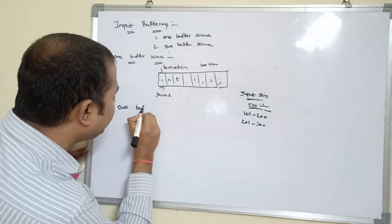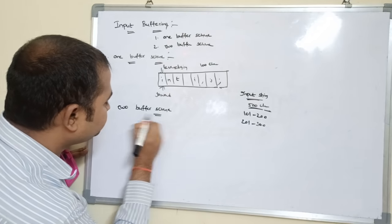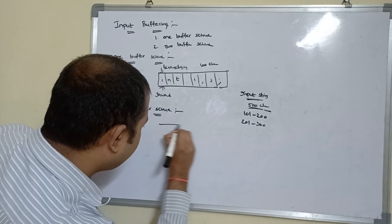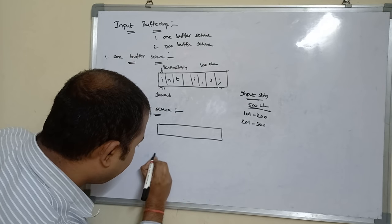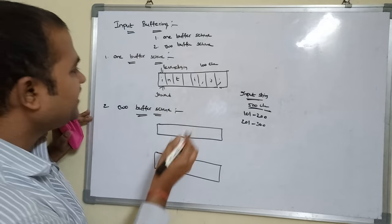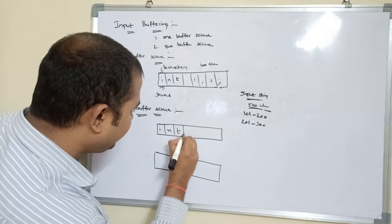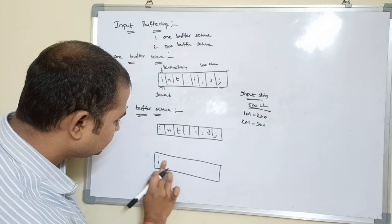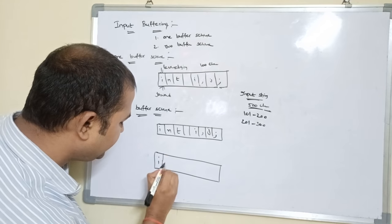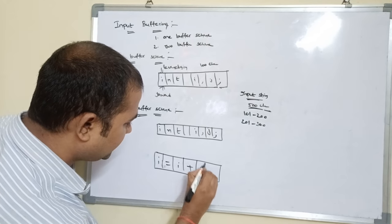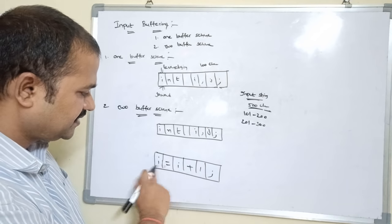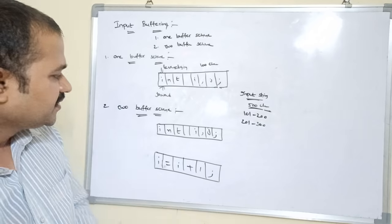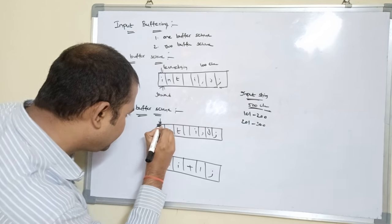We can overcome this problem with the two buffer scheme. In a two buffer scheme, two buffers are maintained instead of one. Let the content of the first buffer be 'int i, j;' and the content of the second buffer be 'i = i + 1;'. Initially, lexeme begin pointer and forward pointer point to the beginning character of the first buffer.